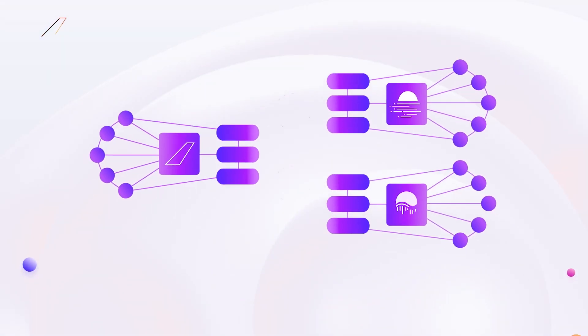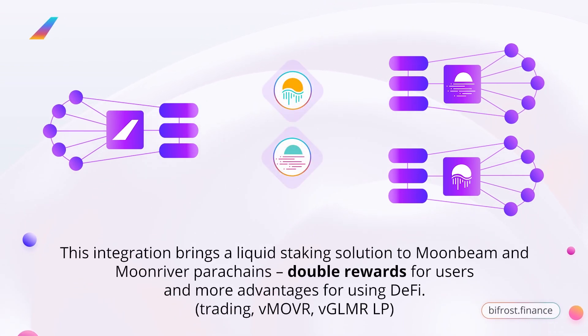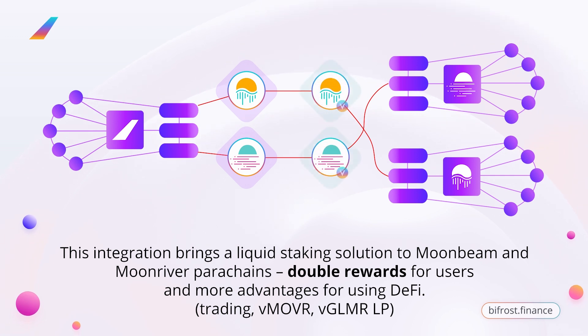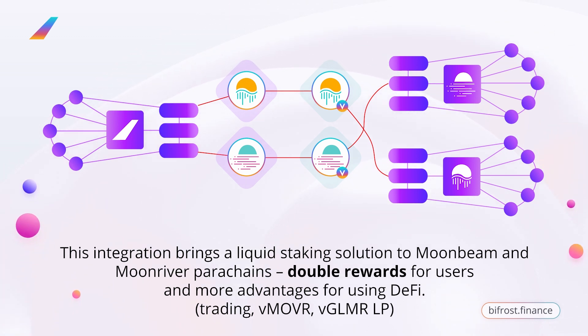Bifrost provides something special for the Polkadot ecosystem – the liquid staking solution. With the latest Bifrost and Moonbeam integration, users can stake their native Moonbeam and Moonriver tokens and earn increased rewards with the help of liquid staking capital efficiency. Unlike native staking, using liquid staking, users keep their liquidity unlocked. Instead of locking Glimmer tokens, users receive vGlimmer tokens in exchange for staking.